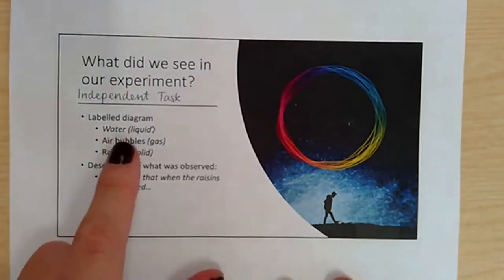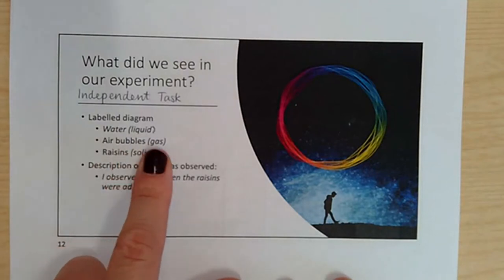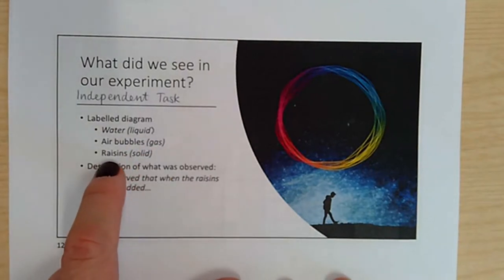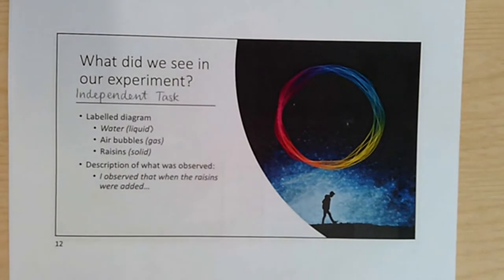I'd like you to label it with water, which is your liquid, the air bubbles, which are the gas and then the raisins, which are the solids. Then underneath your diagram, I would like you to write a description of what you observed.